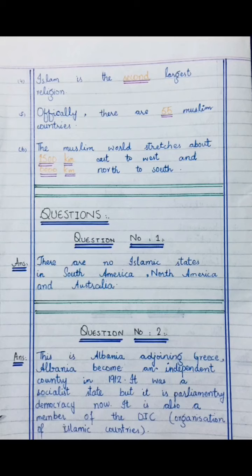For question number 2, which is also on page 3, you can help from your school library. The answer is Albania. Albania joined Greece and became an independent country in 1912. It became an independent state. It was a socialist state — socialist means that trading and wealth should be owned or controlled by the workers.